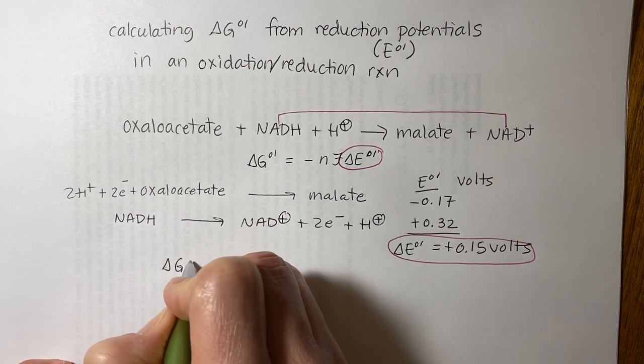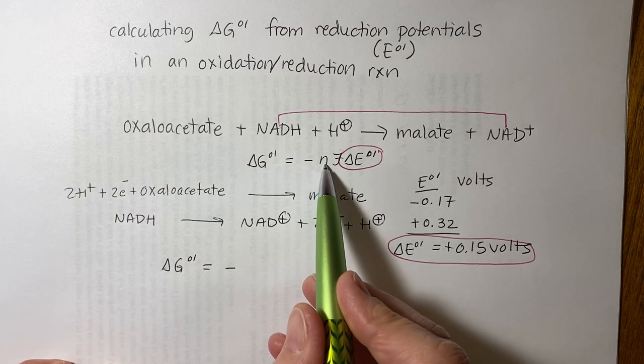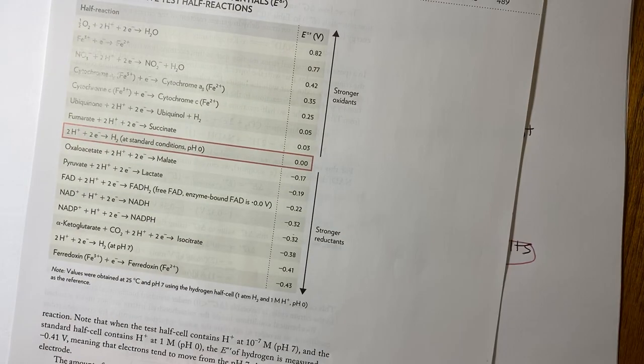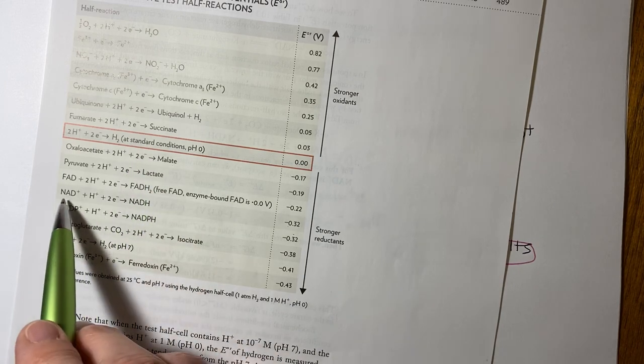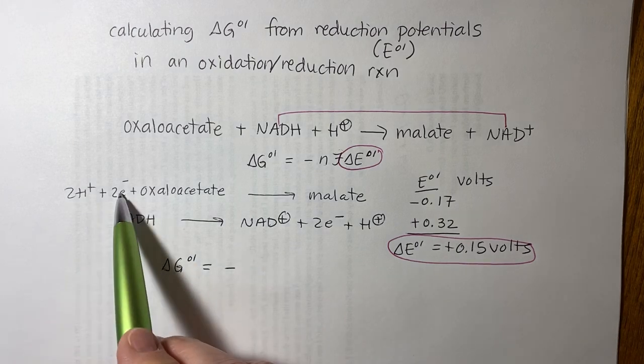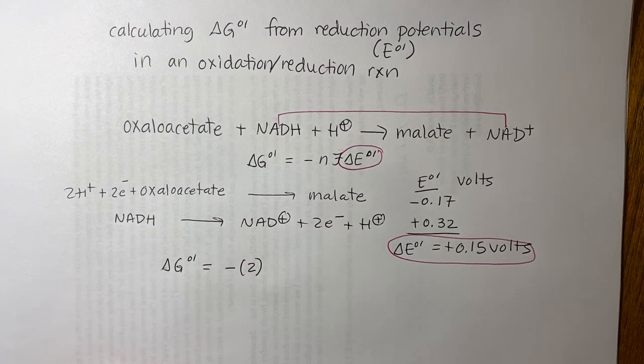So delta G not prime equals minus N is the number of electrons. So if you look in your table, you'll see that oxaloacetate has a 2 electron change. NAD plus has a 2 electron change. And that's what I wrote down in two half reactions. So N is going to be 2, just the number of electrons.